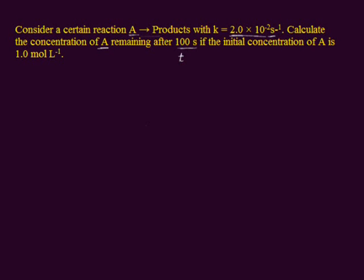If the initial concentration of reactant A is 1.0 mol per liter, the initial concentration of reactant is given and you have to calculate the remaining amount of reactant A after 100 seconds.